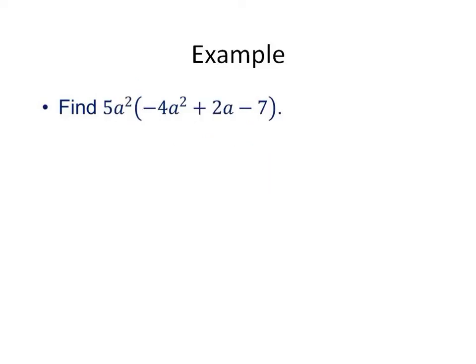Let's try that one more time here. We have this monomial out front and we are going to be distributing it. Watching our signs, we're going to get negative 20a to the fourth, because we add our exponents when we're multiplying, plus 10a cubed minus 35a squared. That's it. That's all you're doing.